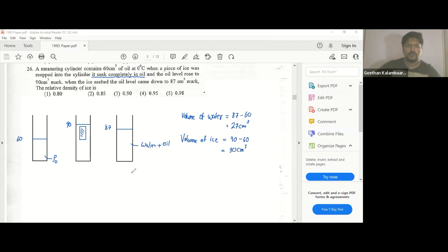Now we know there was some ice, then it became water. It's the same mass of ice and water, volume 30 and 27.